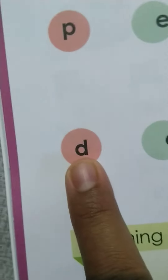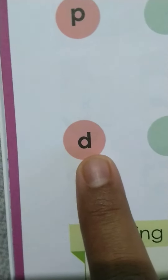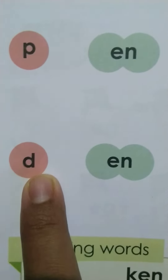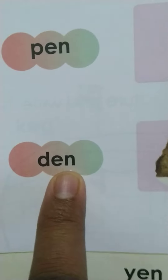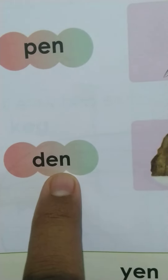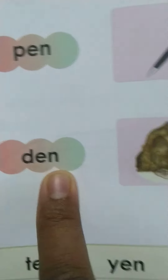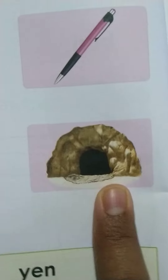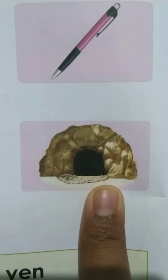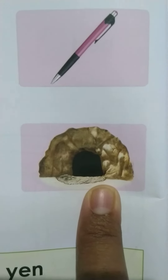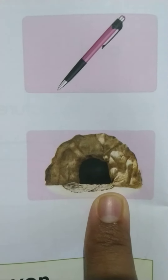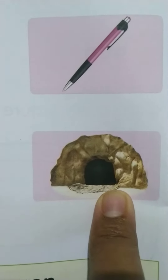Look at here. D, E, N: den. Together here, D, E, N — den. Den is a place where the wild animal lives.